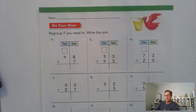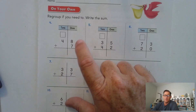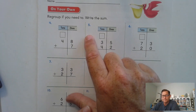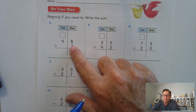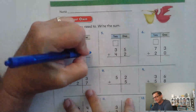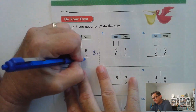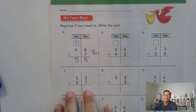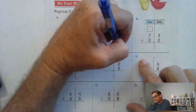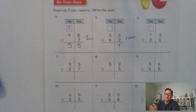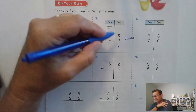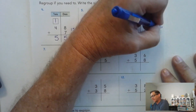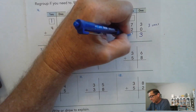Page 195. Regroup if need to and write the sum. 8 and 7 — I know that 8 is the same thing as 7 plus 1 more, so 7 and 7 is a doubles fact, that's 14, plus 1 is 15. So 15 ones — that's greater than 10, so we're going to trade 10 of the ones for a 10. 4 tens plus 1 ten — 55. Next: 5 ones plus 2 ones is 7 ones, not greater than 10, so we don't need to regroup. 4 and 3 tens is 7 tens. Then 3 and 0 ones is 3 ones — not 10 or greater, so we don't regroup. 7 and 2 is 9.